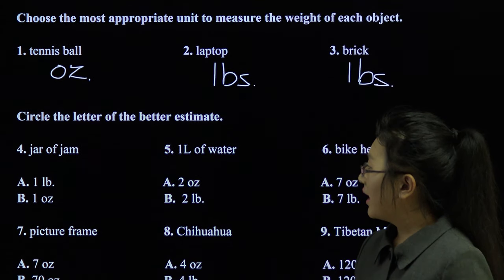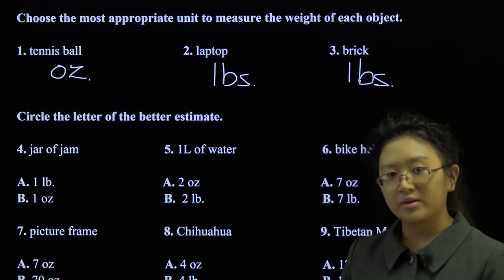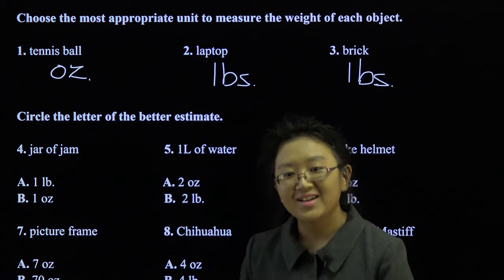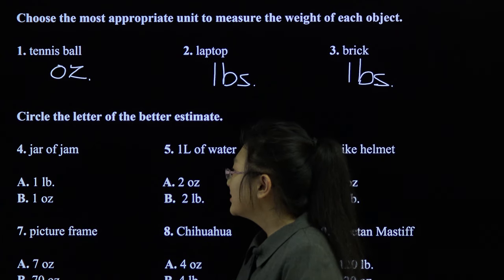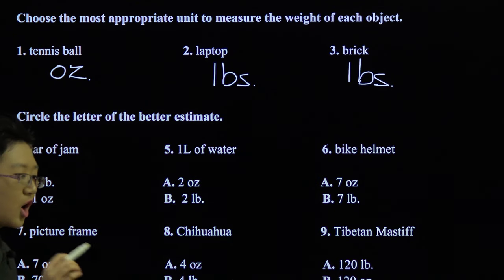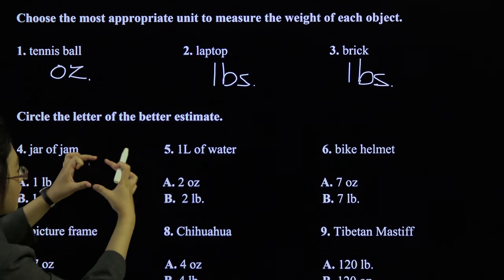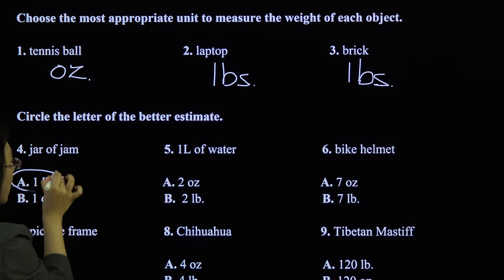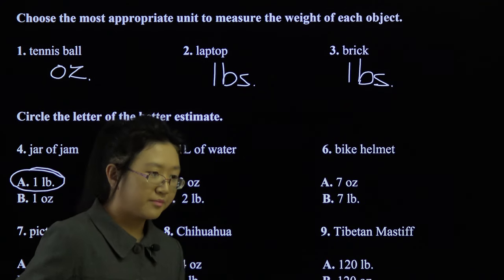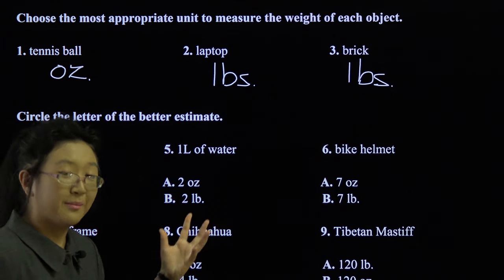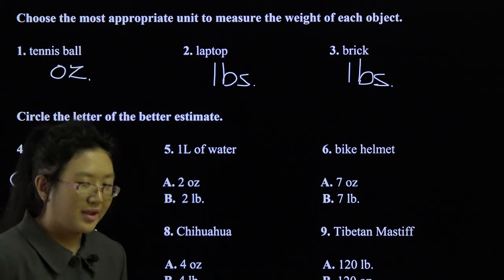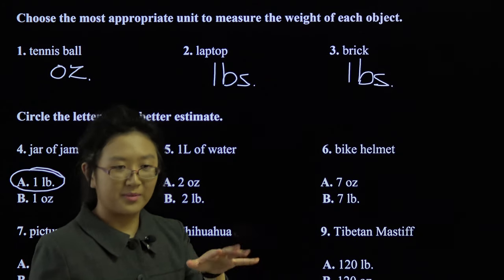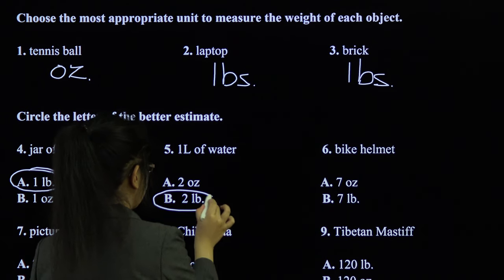Now, circle the letter of the better estimate. Jar of jam. A pound or an ounce? So, since an ounce is pretty light. An ounce is really light. But, well, here's the thing. Here's an example of a pound. Usually, a standard jar of jam is around a pound. I'm not talking about the small jars. I'm talking about the standard jars. Not the huge jars either. One liter of water. Okay, guys. This is why a lot of people prefer the metric system. Because one liter of water is equal to one kilogram. And one kilogram is equal to 2.2, approximately, around 2.2 pounds. So one liter of water would be around 2 pounds.